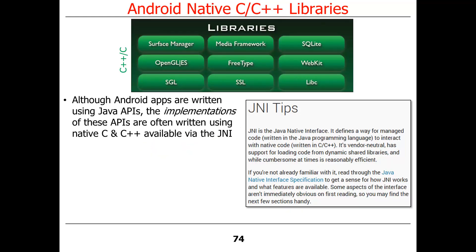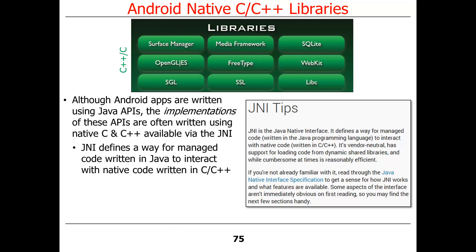Most Android applications are written in Java. However, most of the libraries those applications call — the Java class libraries or Android class libraries — are actually not implemented in Java but instead implemented in C and C++, available to the Java layer via the Java Native Interface (JNI). JNI provides a way for managed code written in Java — with strong type checking, range checking, and pointer safety — to call methods whose implementations are written in C and C++, which are more efficient and use time and space resources better.